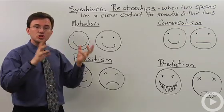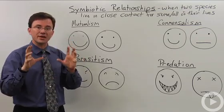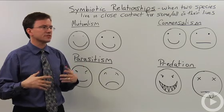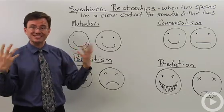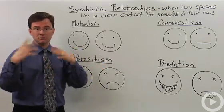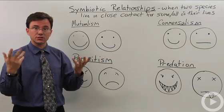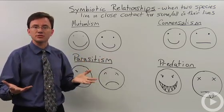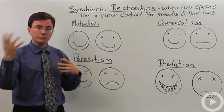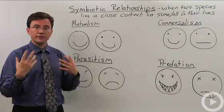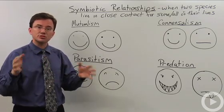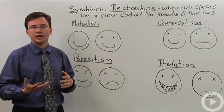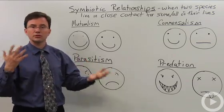Mutualism is when two different creatures both benefit from their relationship. There are many examples of this in nature. For example, cats and humans: cats get nice shelter and we feed them, while they hunt down rodents for us, and in modern times it's been found that having a cat helps reduce negative emotions. Similarly, there's a mutualistic relationship between dogs and humans.